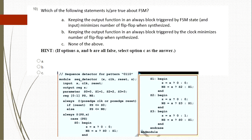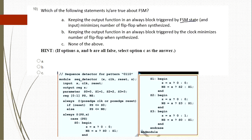The tenth question: which statement is true about FSM? Keeping the output function in an always block triggered by FSM state minimizes the number of flip-flops — this is the answer, A. When assigning output within an always block triggered by the FSM state (including state and input), the number of flip-flops is reduced. This is preferred over triggering by clock, which does not minimize flip-flops.